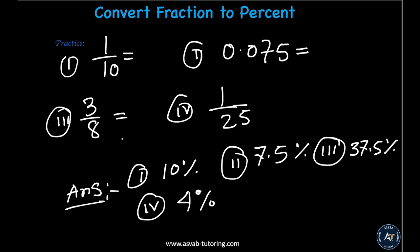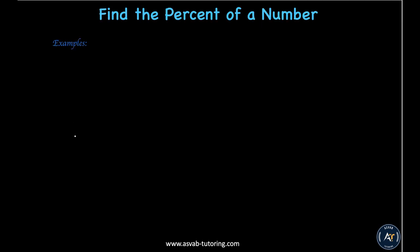Practice a couple of times and it will get easier. Now let's go to the next topic: finding the percent of a number. The first problem is 5 percent of 300. We learned that 'of' means multiply, so convert 5% to a decimal first, then multiply.